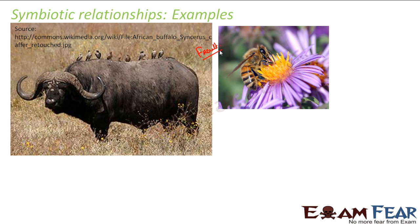The next example is flowering plants and honeybees. The honeybees get their nutrition — nectar — from flowers and have no second source for it, so they are completely dependent on flowers. The flowers are also dependent on honeybees for pollination. So this is an obligate relationship.